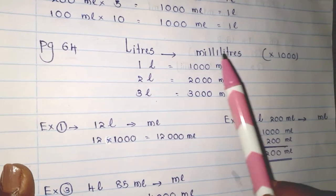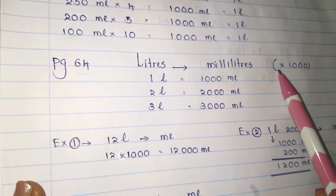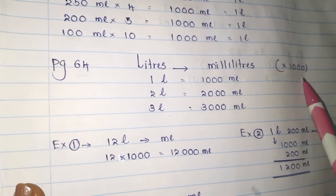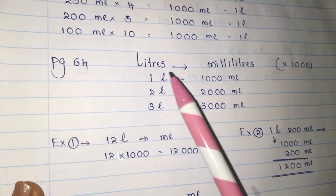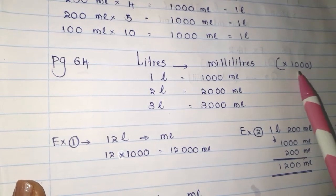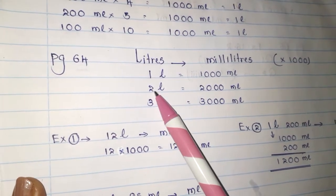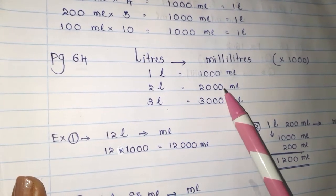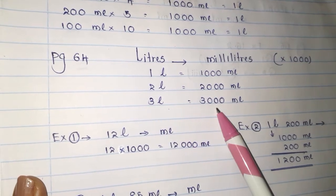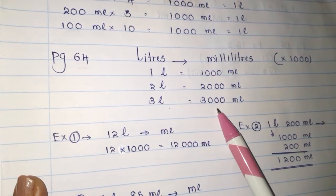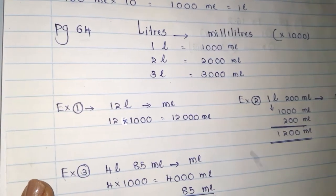When converting liters into milliliters, you multiply by 1000. Why do you multiply by 1000? Because 1 liter has 1000 milliliters. So 2 multiplied by 1000 is 2000, and 3 multiplied by 1000 is 3000. That is the way we get the answer.